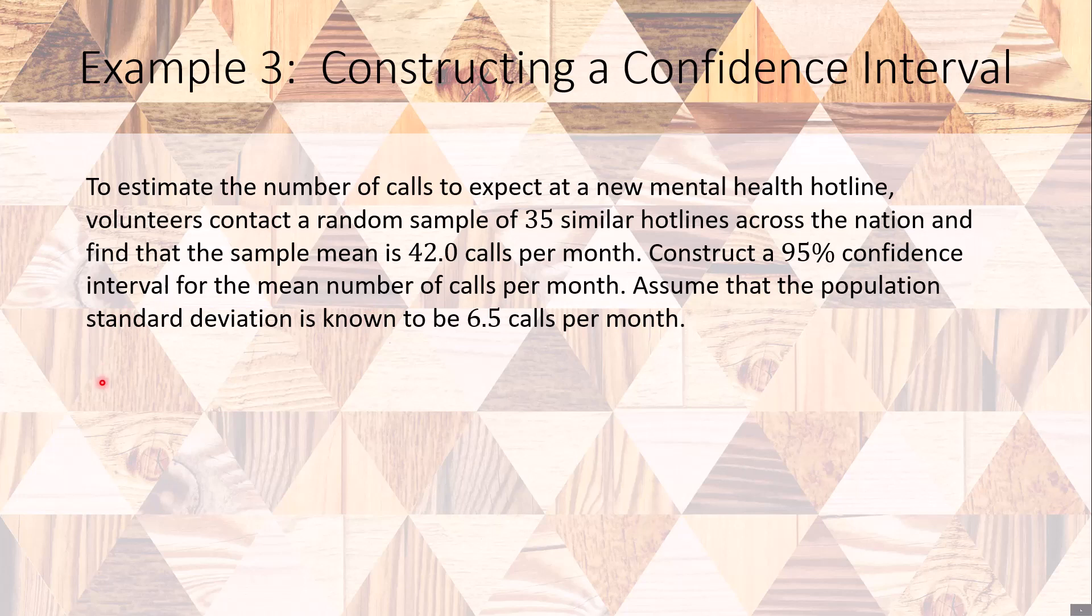From this we know a couple of things. First, we know our sample mean is 42 calls per month. We know the sample size n equals 35, and we know our confidence level needs to be 95%. So the only other thing we need to figure out is our margin of error.